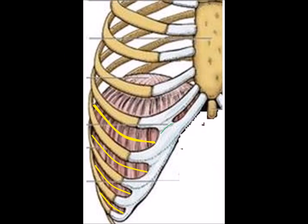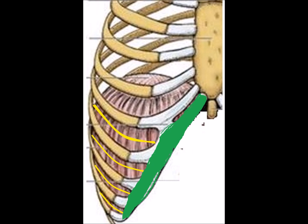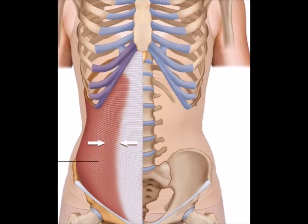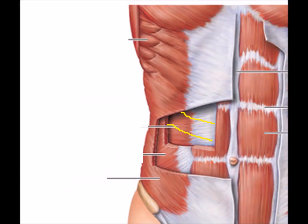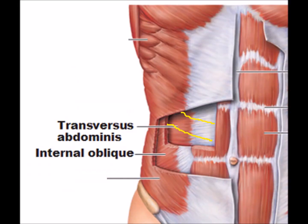The lower intercostal nerves run deep to the costal margin and pass to the abdomen. In the abdomen, they run superficial to transversus abdominis. The upper nerves run between the transversus abdominis and rectus abdominis, while the lower nerves run between the transversus abdominis and internal oblique.